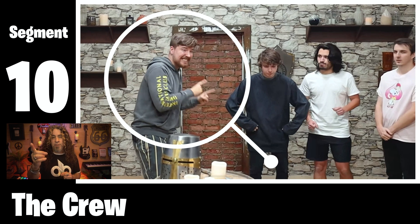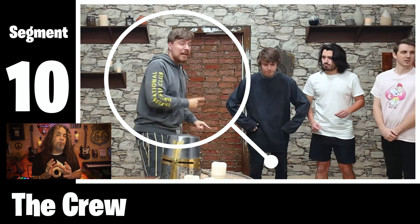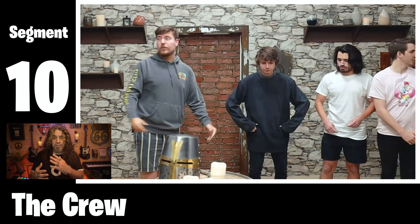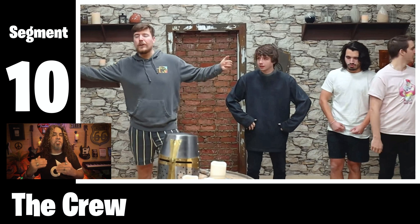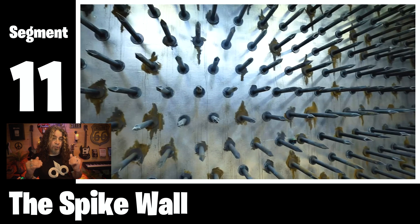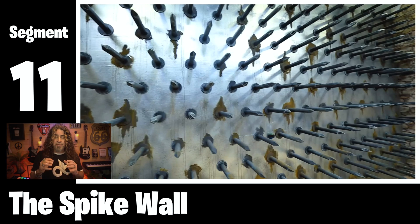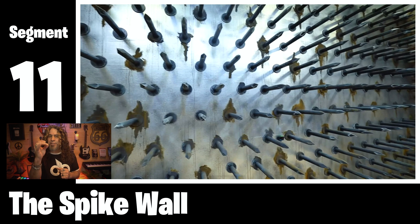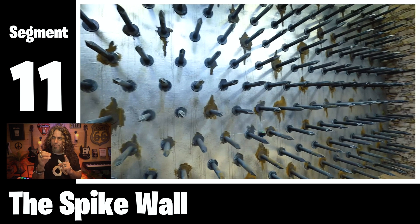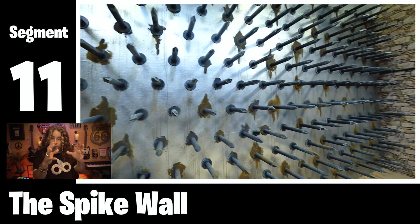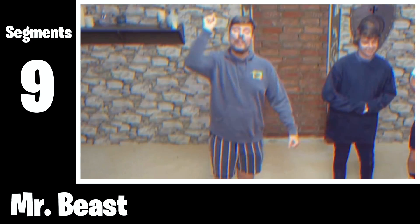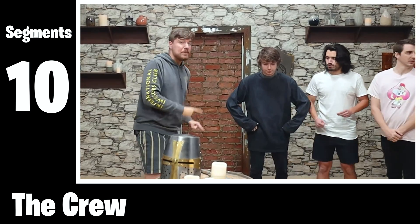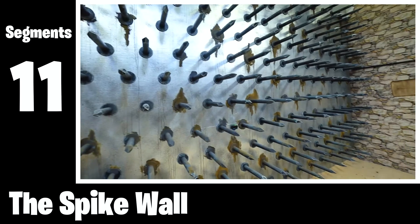Segment ten is a cropped-in shot of Mr. Beast continuing to explain the first level. Moving into segment eleven, there's no transition, just another standard cut. Segment eleven is back to the shot of the spike room — the room they'll be starting in, and also the room depicted in the thumbnail. Perfectly timed, just as Mr. Beast says they must escape this room before these spikes impale them.